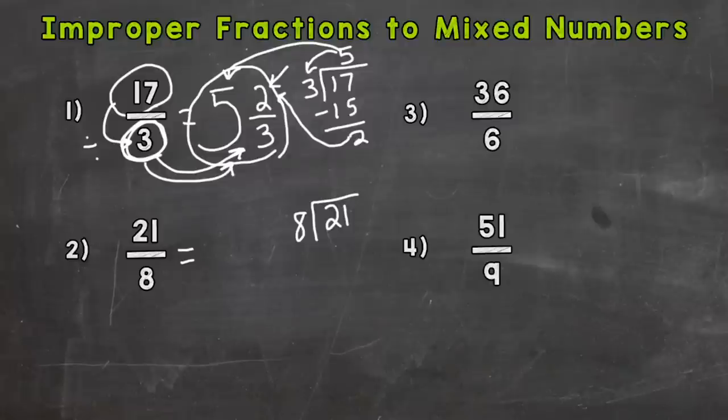So 21 divided by 8. How many whole groups of 8 can we pull out of 21? Well, 8, 16, 24. 3 eighths. 3 eighths is too many, so it's only going to be 2. So that's our whole number part of our mixed number. 2 times 8 is 16. We subtract, and we get a remainder 5.